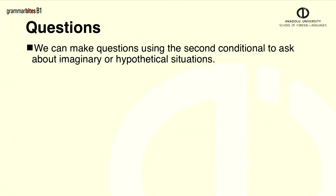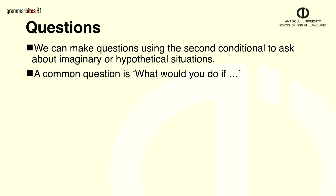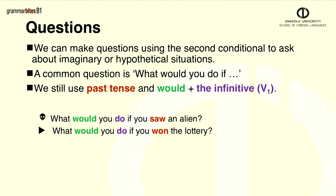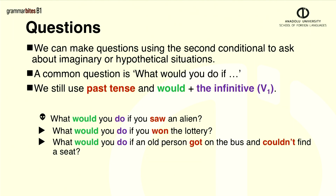We can make many questions with the second conditional to ask about imaginary or hypothetical situations. A common question is what would you do if… We still use the past tense and would plus the infinitive. Here are some examples: What would you do if you saw an alien? What would you do if you won the lottery? What would you do if an old person got on the bus and couldn't find a seat? Here's a group of friends with a discussion about an imaginary situation.